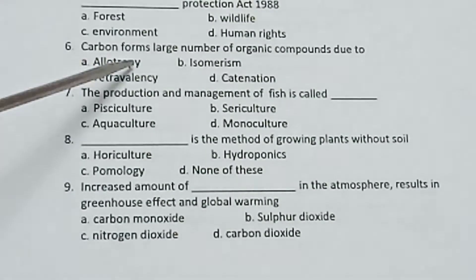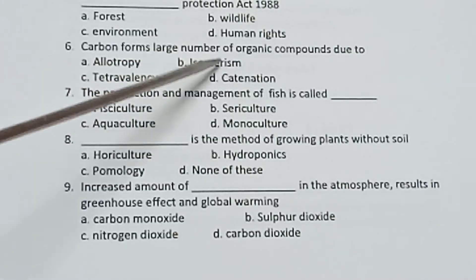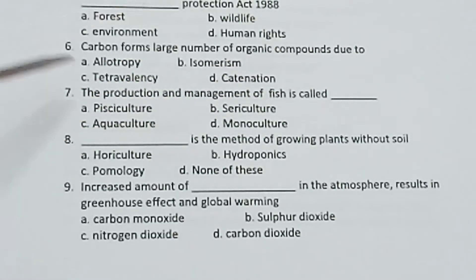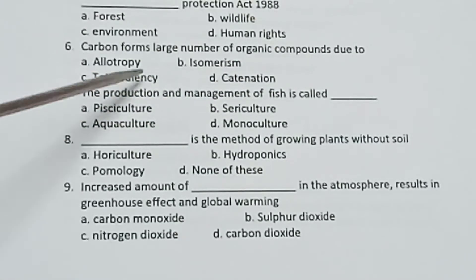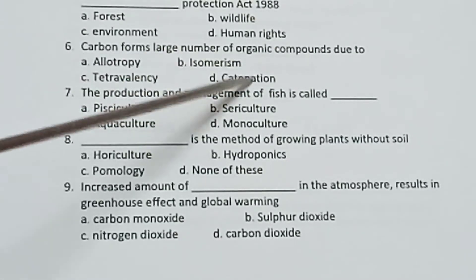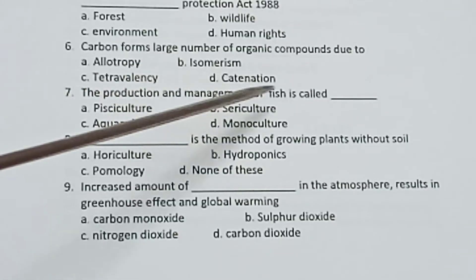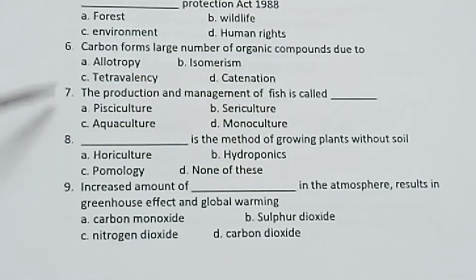Sixth one: Carbon forms a large number of organic compounds due to — allotropism, isomerism, tetravalency, catenation.